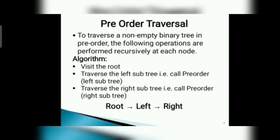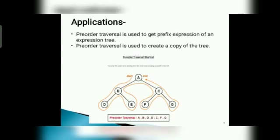To traverse a non-empty binary tree in pre-order, the following operations are performed recursively at each node. The algorithm is: visit the root, traverse the left subtree in pre-order, traverse the right subtree in pre-order. Its form is root-left-right.